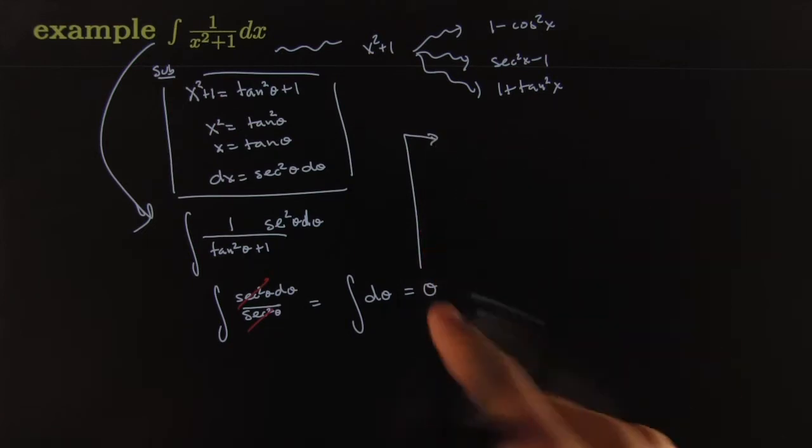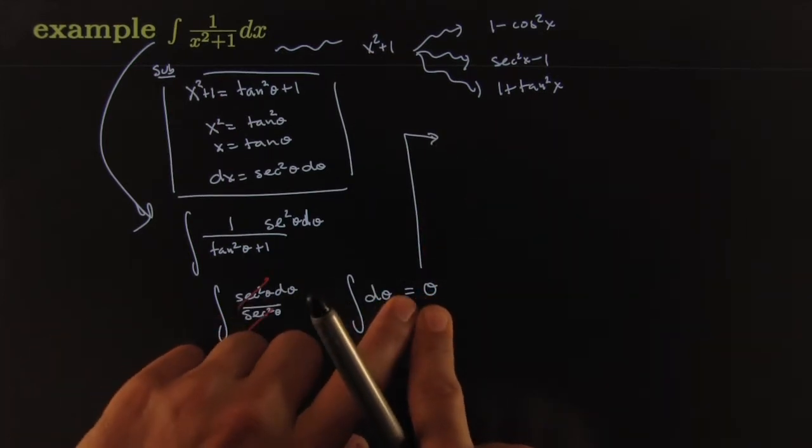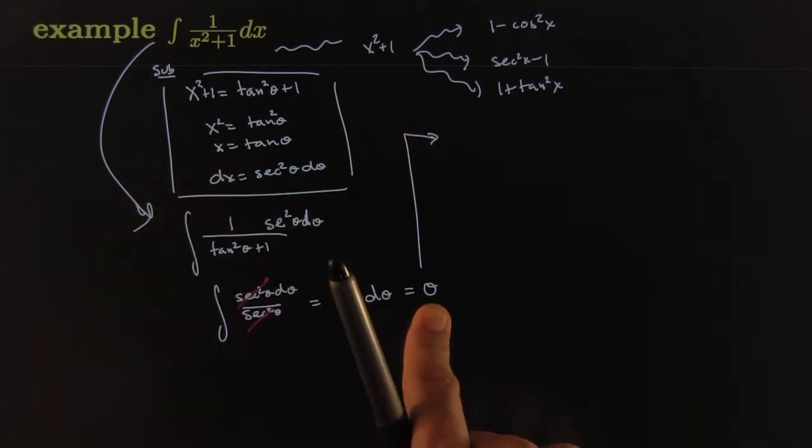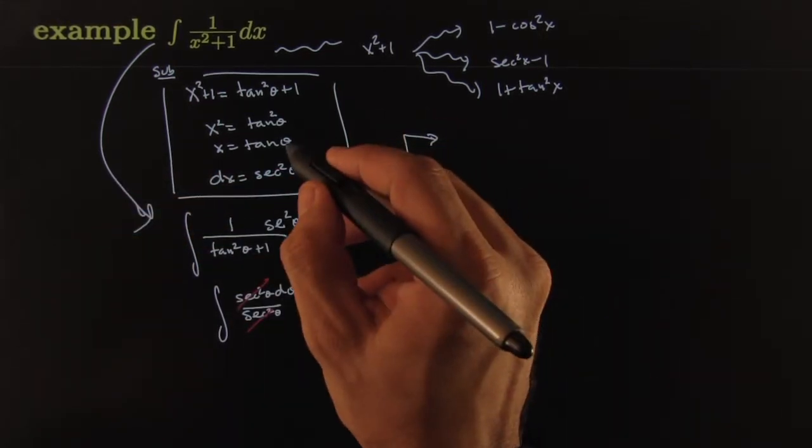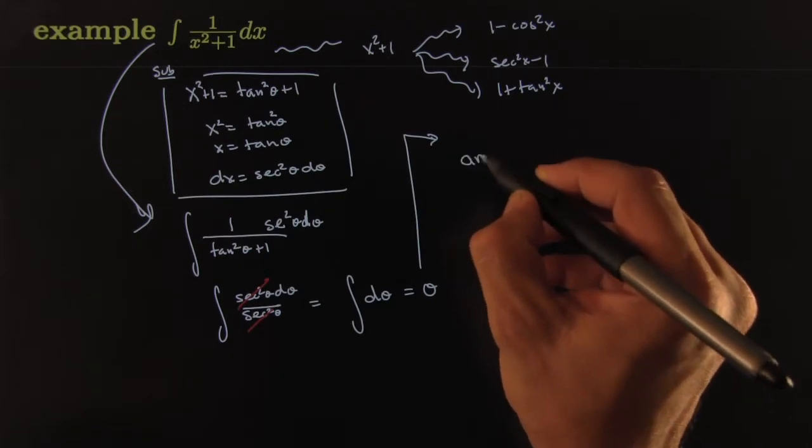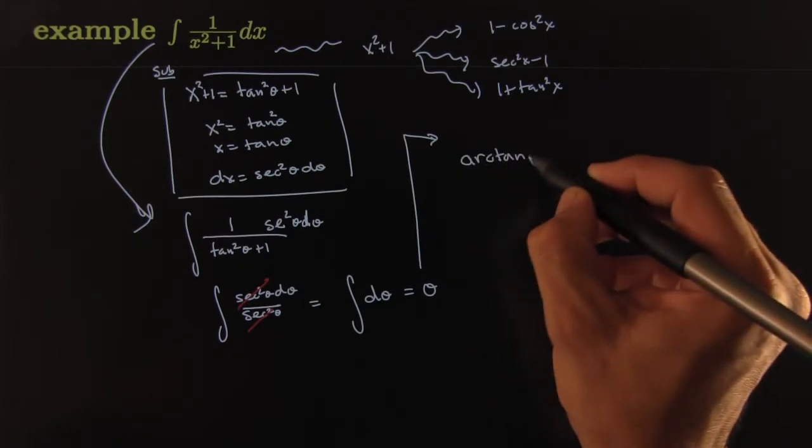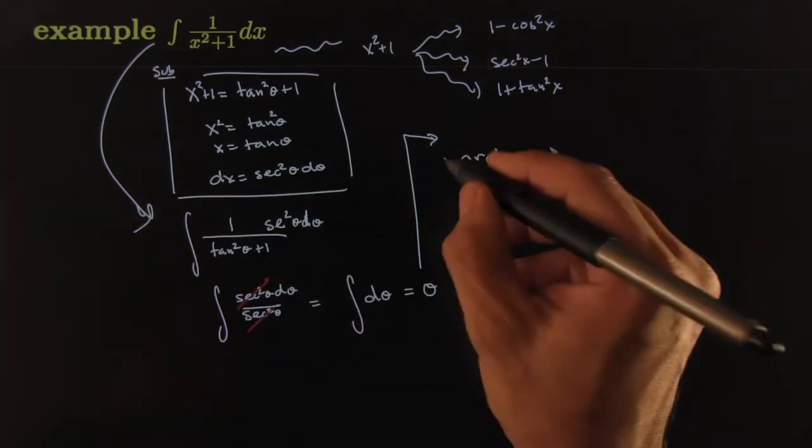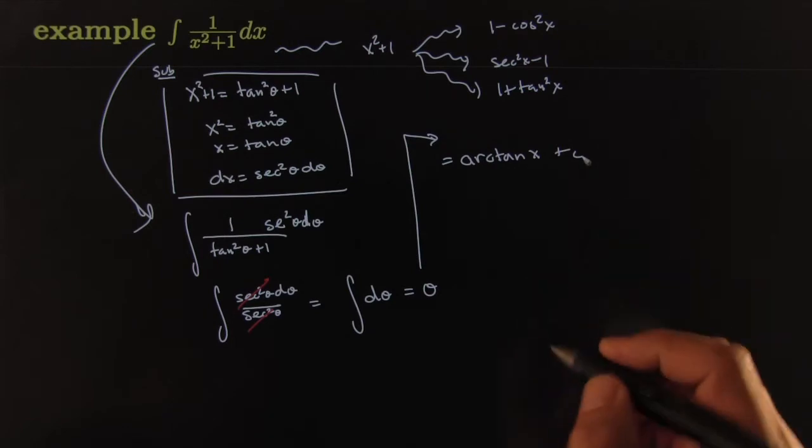Now it's customary to answer in the same way the original question was posed. It was posed with x's, so it might be polite to answer with x's. You go back to the dictionary. Maybe do an arc tangent on both sides. Arc tangent of x equals theta. And so the integral theta equals that plus a constant.